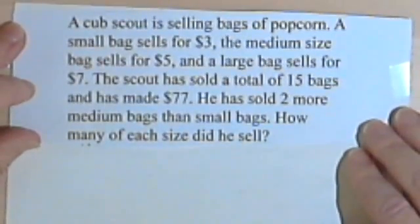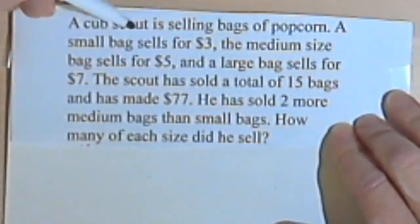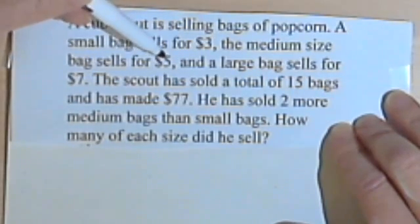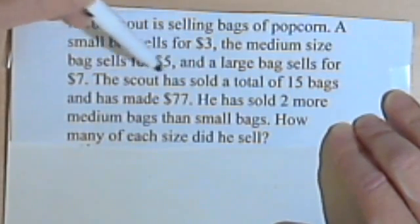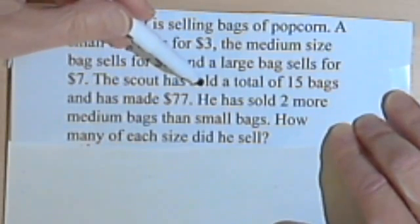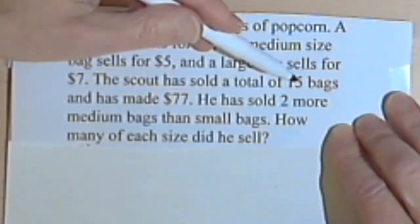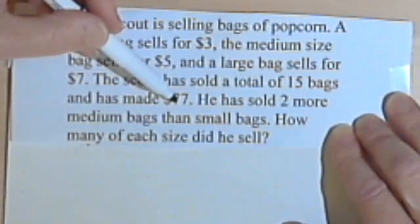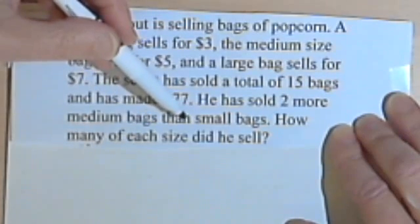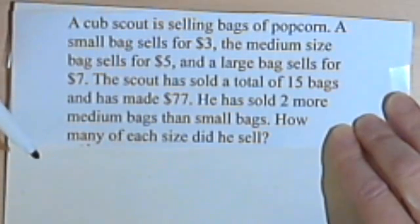A Cub Scout is selling bags of popcorn. A small bag sells for $3, the medium-sized bag sells for $5, and a large bag sells for $7. The Scout has sold a total of 15 bags and has made $77. He has sold two more medium bags than small bags. How many of each size did he sell?